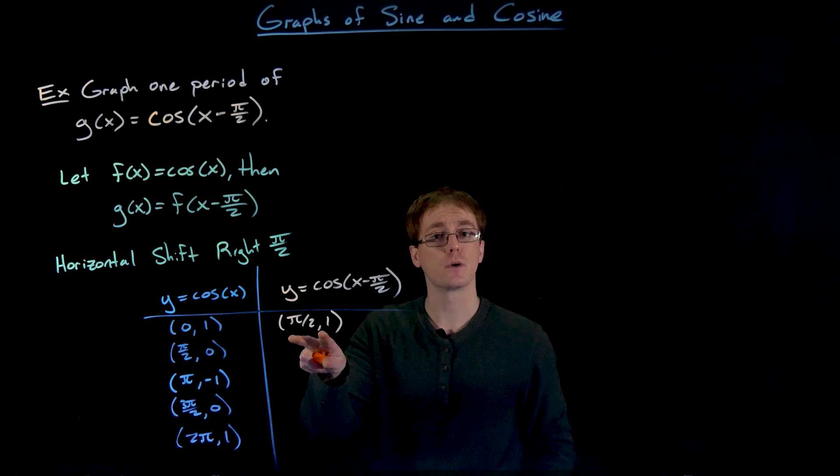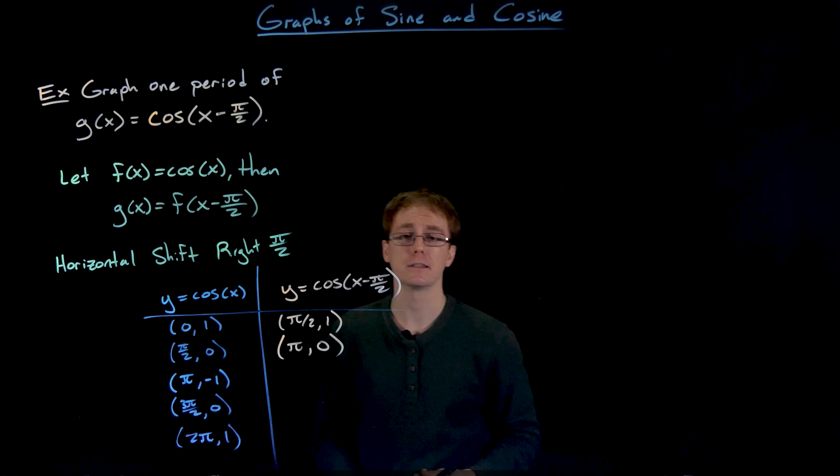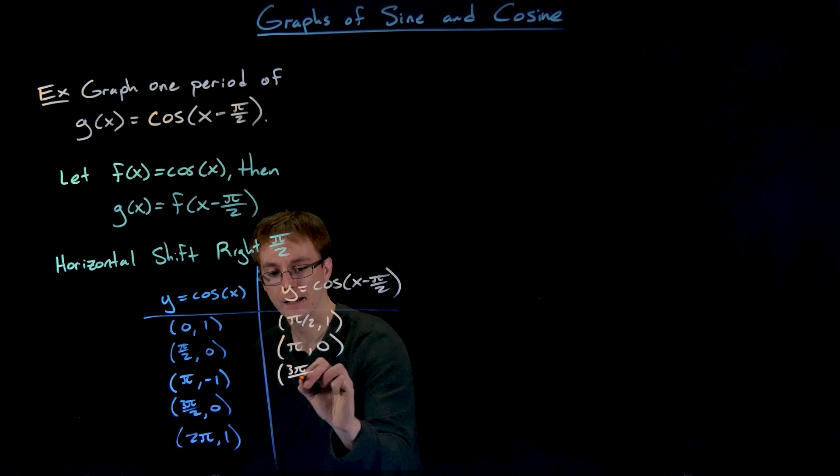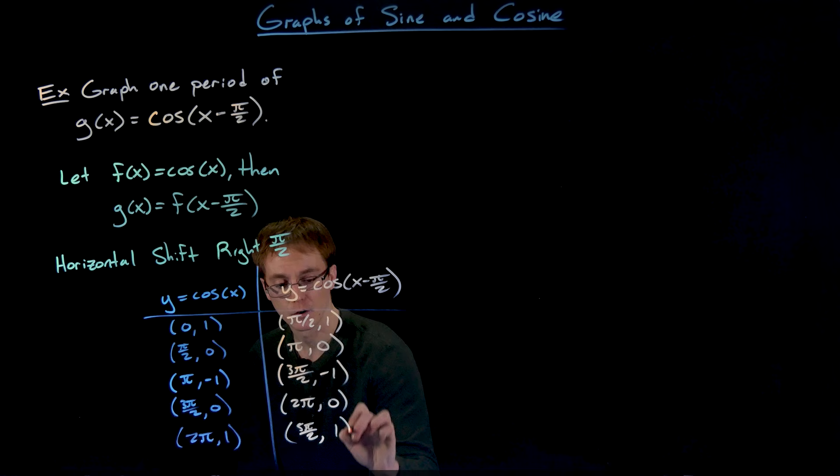Our point that was at (π/2, 0) is going to end up at (π, 0), and we just repeat this for the remaining points in our table. So we end up with (3π/2, -1), (2π, 0), and then our last point is going to transform into (5π/2, 1).